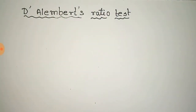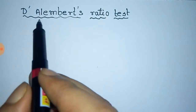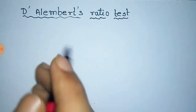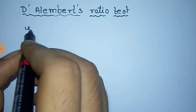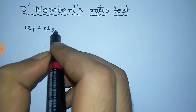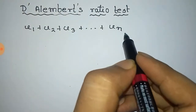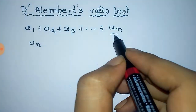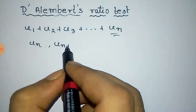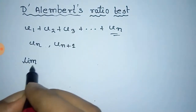Now we shall discuss the D'Alembert's ratio test, by which we can say if our series is convergent or divergent. First of all, we shall take a series like u1 plus u2 plus u3 plus dot dot u_n, which is the nth term of the series. Then we take the nth term u_n and the (n+1)th term, that is u_{n+1}.